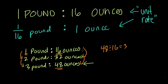which means three groups of 16 ounces go into 48 ounces, which means that we have one times three pounds. And that's our answer, three pounds.